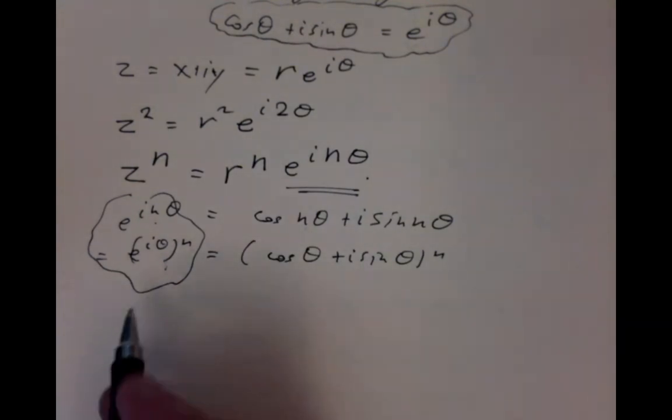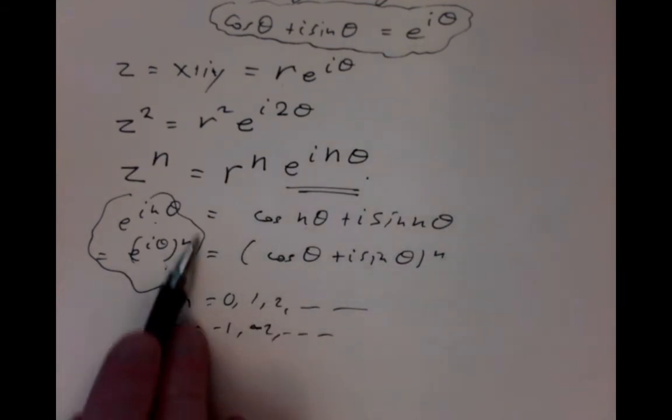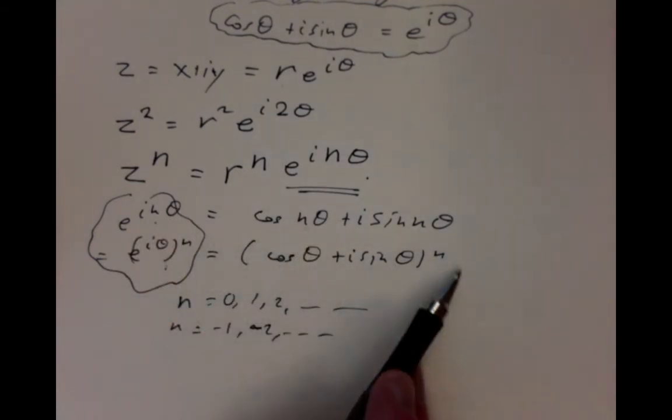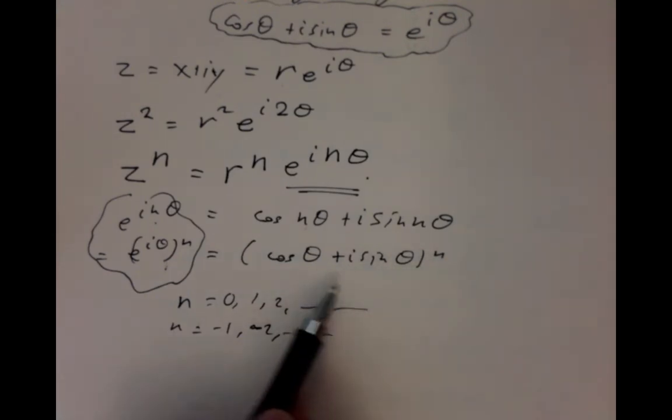It makes sense for n not just positive, n equals 0, 1, 2, and so on, but also for n equals minus 1, minus 2, and so on. The n being negative means you're taking a negative power, which is a reciprocal of a positive power. That gives you another collection of enormously many trigonometric identities.